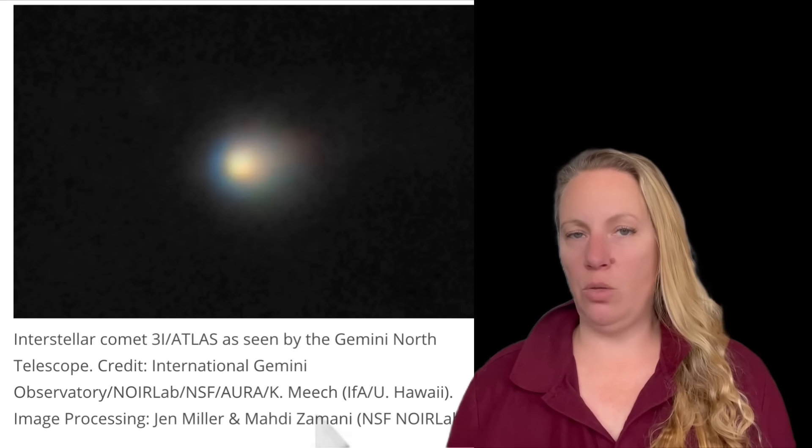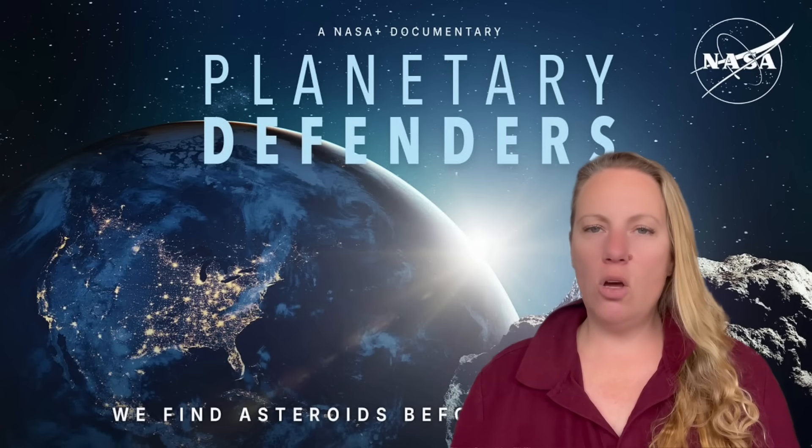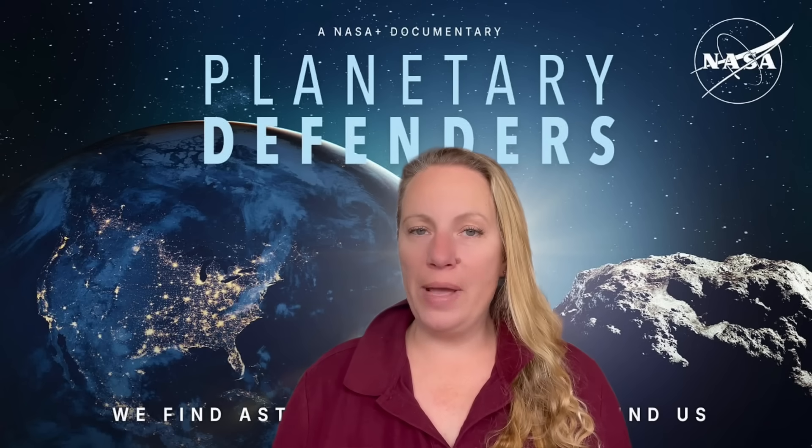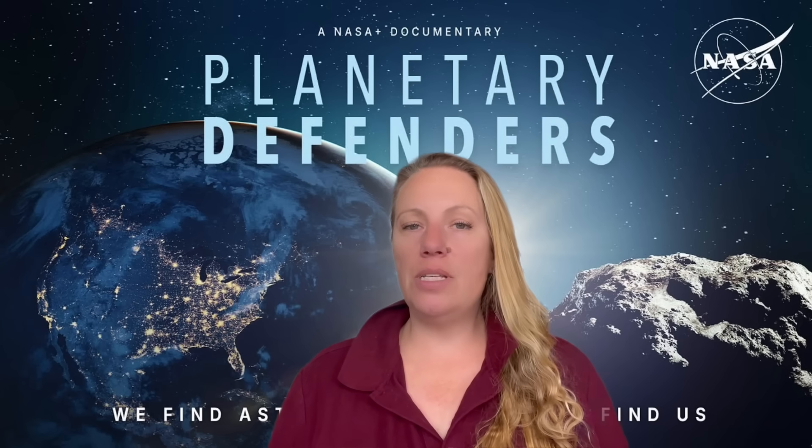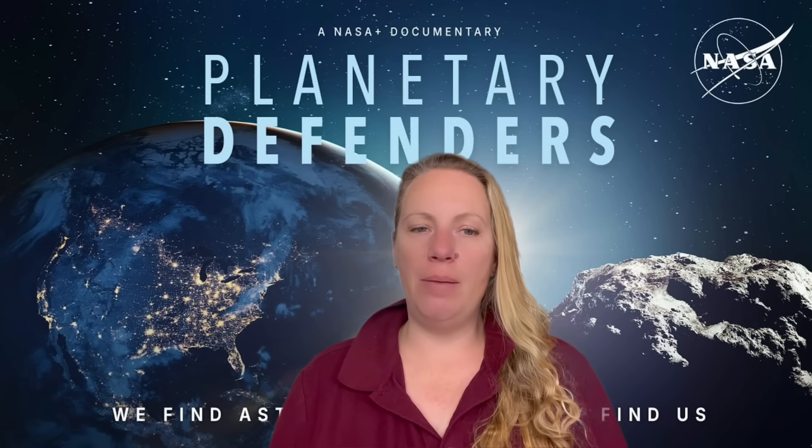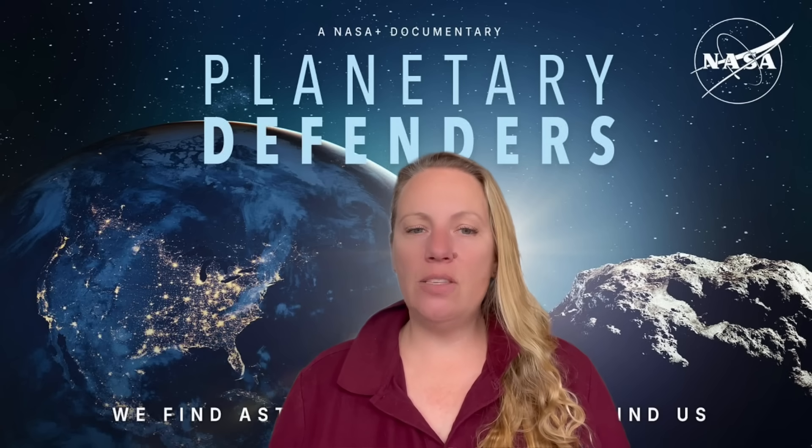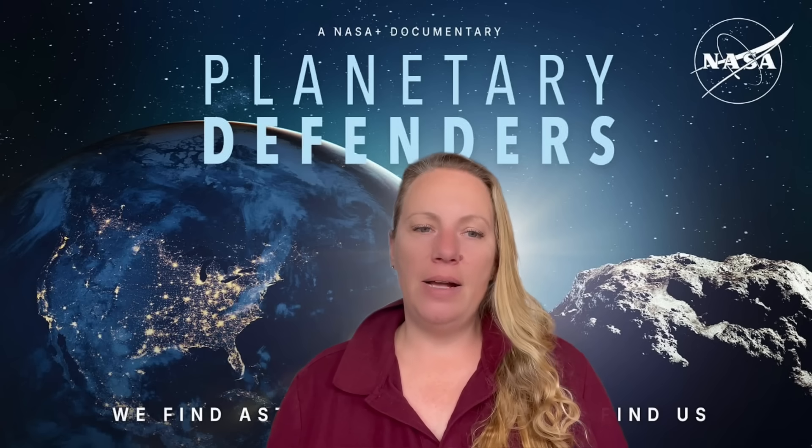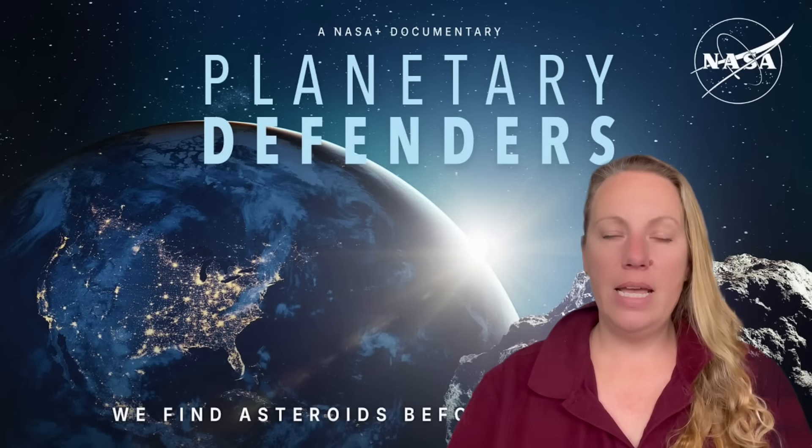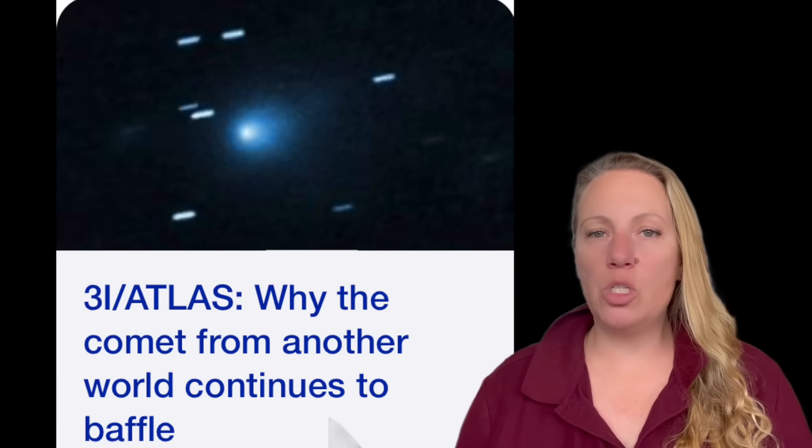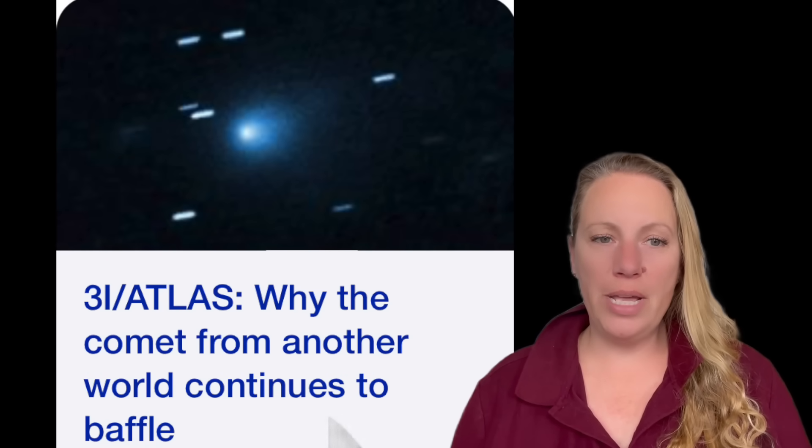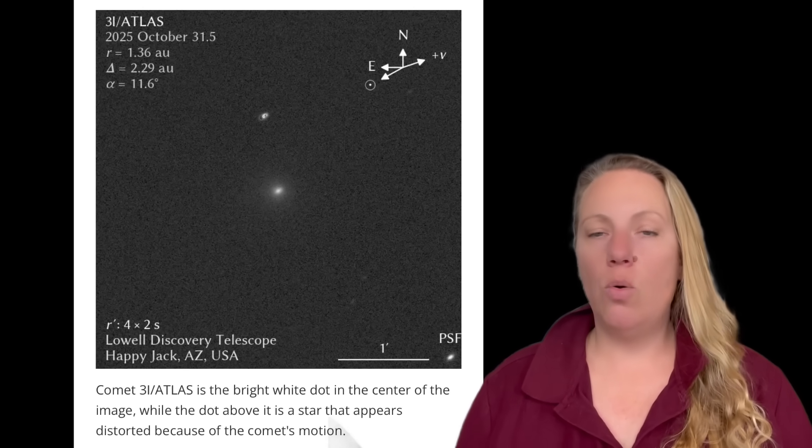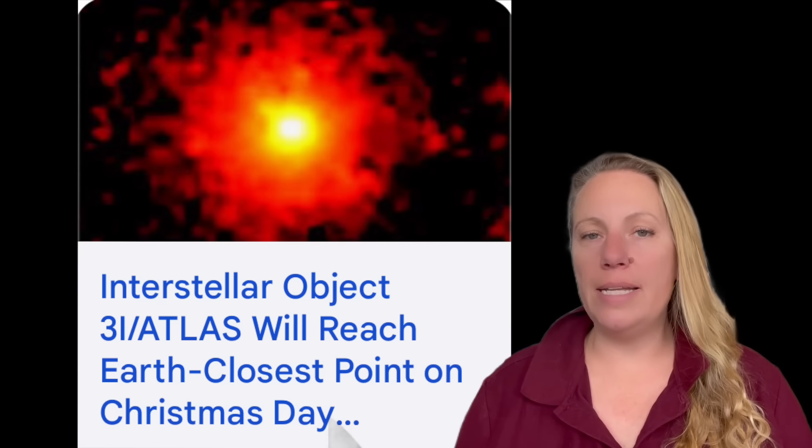According to NASA, this object will not pose any threat to Earth. Its closest approach to our planet will be about 1.8 astronomical units, around 170 million miles or 270 million kilometers away from us. It reached perihelion, the closest point to the Sun, around October 30th, coming within 1.4 AU - 130 million miles or 210 million kilometers - just within the orbit of Mars.